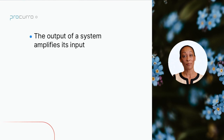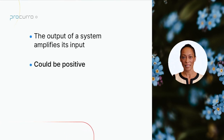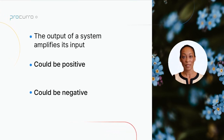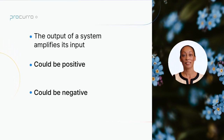Balancing feedback loops are like a tightrope walker, maintaining stability by keeping things in balance. They make sure that a system doesn't go haywire and keeps things in check. Reinforcing feedback loops, on the other hand, are like a snowball rolling down a hill. They can drive exponential growth or decline in a system. If the snowball gets bigger and bigger, it's a reinforcing feedback loop; if it starts to shrink, it's the opposite.